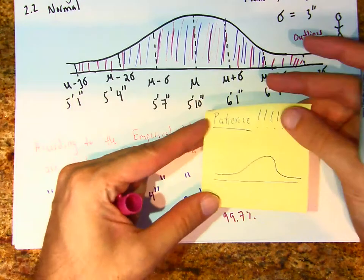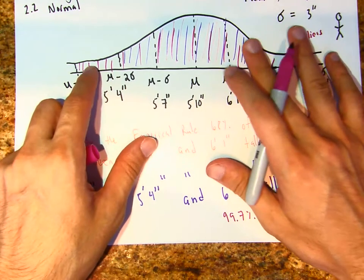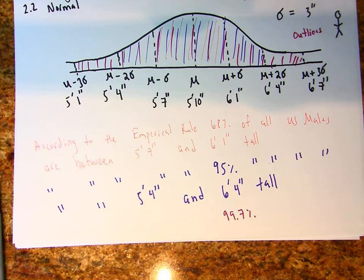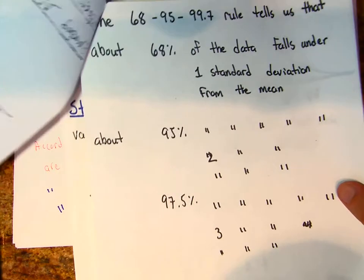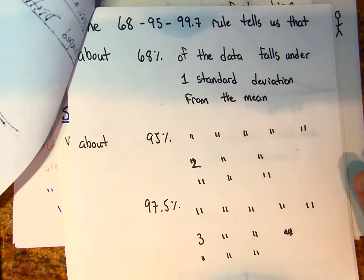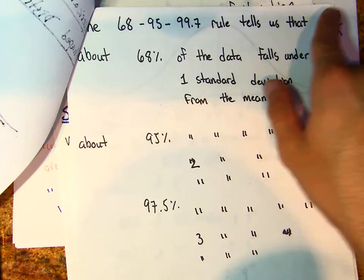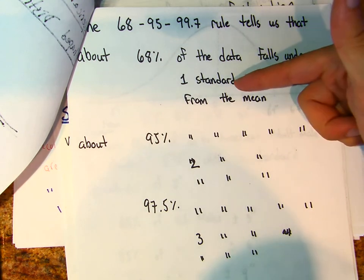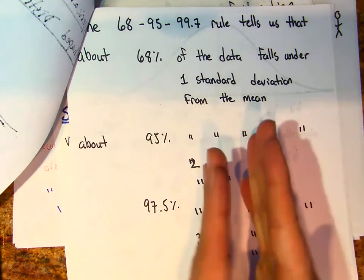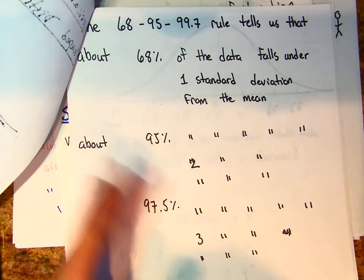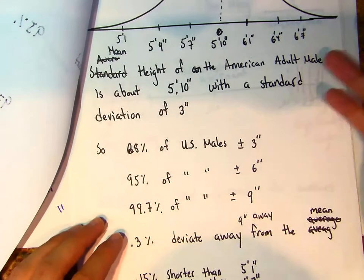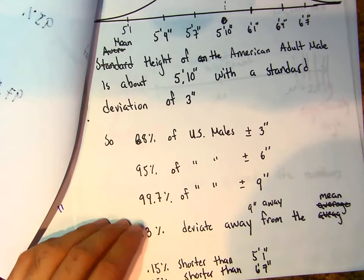I ask again to have patience, because I know this idea takes some time to sink in. To recap: the 68-95-99.7 rule states that 68% of data values fall within one standard deviation, 95% within two standard deviations, and 99.7% within three standard deviations. This is the same example we just worked through.